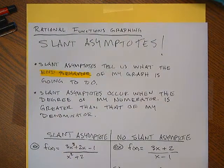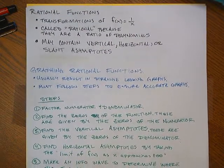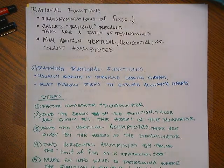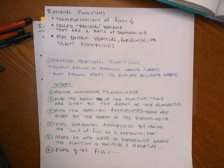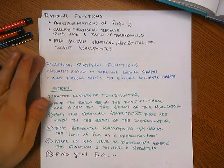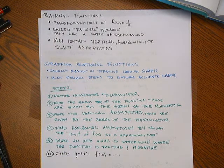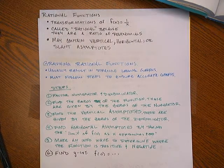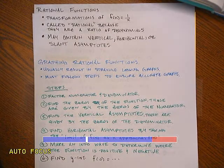I'm just going to flash the notes from last time real quick here, so if you don't have the notes from last time, you can go ahead and pause the video and write them down. These were the notes — the procedure for graphing rational functions that don't have slant asymptotes, functions that have just horizontal asymptotes. So if you want to take those down now, go ahead and pause the video.